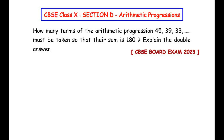Let us try to understand the question first. Here we have been given that there is a sequence that follows arithmetic progression. The sequence is 45, 39, 33, and so on, and we can see that this is a decreasing sequence as the number is decreasing at each step. The hint given here is that the sum of all these terms is going to be 180, and we need to find out how many terms there are — it could be 10 terms, 20 terms, and so on.